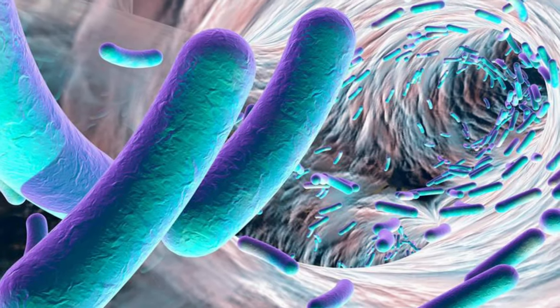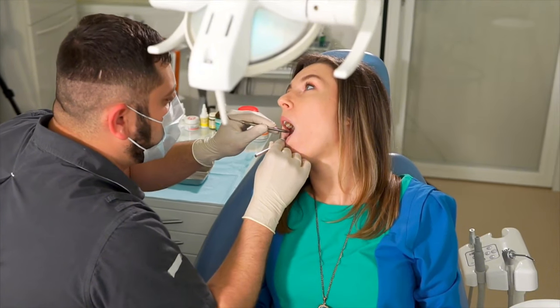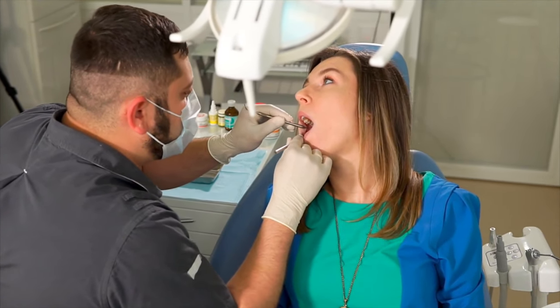Bacteria in the mouth, in order to protect themselves from our immune system and the antibiotics we consume, form biofilms around them. You can think of these biofilms as small calcium houses that these bacteria construct for themselves.